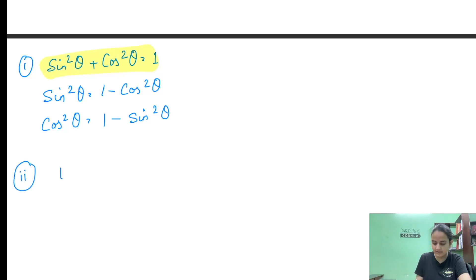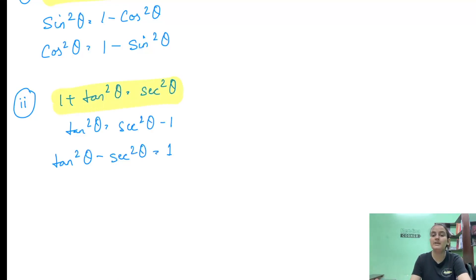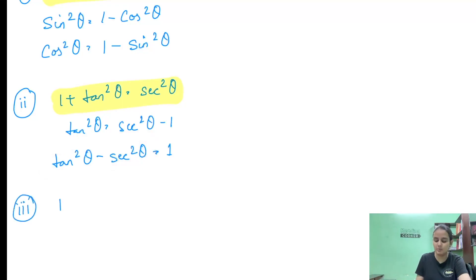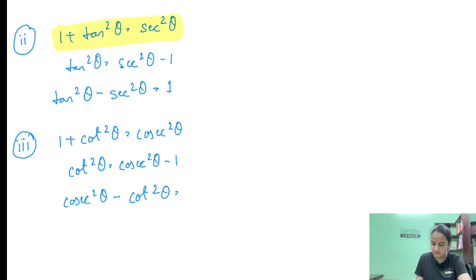अब second identity से भी देख सकते हैं — जो था 1 + tan²θ = sec²θ — तो यहां से अगर हमें tan²θ की value चाहिए, तो हम easily लिख सकते हैं: tan²θ = sec²θ - 1। And similarly, sec²θ - tan²θ = 1। बहुत बार ऐसा होगा कि equation में सिर्फ 1 लिखा होगा, तो हमें अपने question के हिसाब से उसे substitute करना पड़ सकता है।